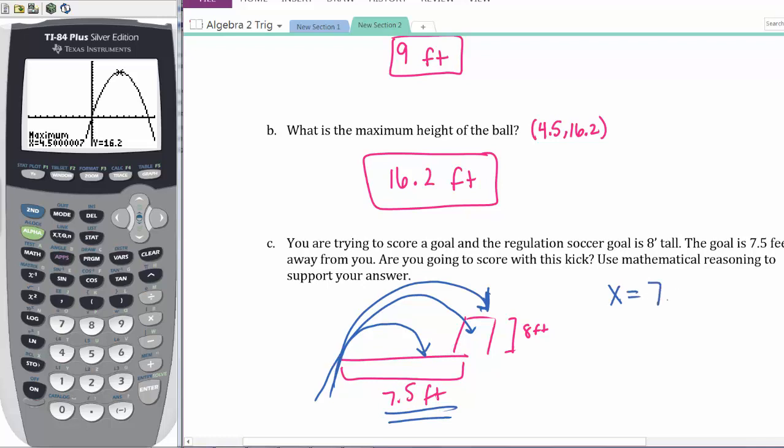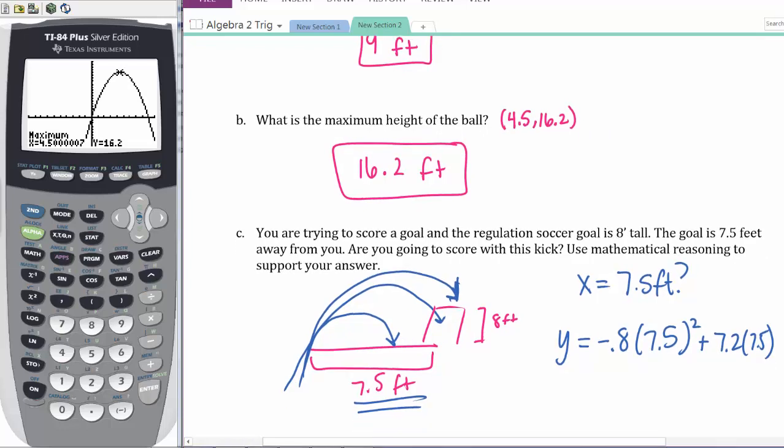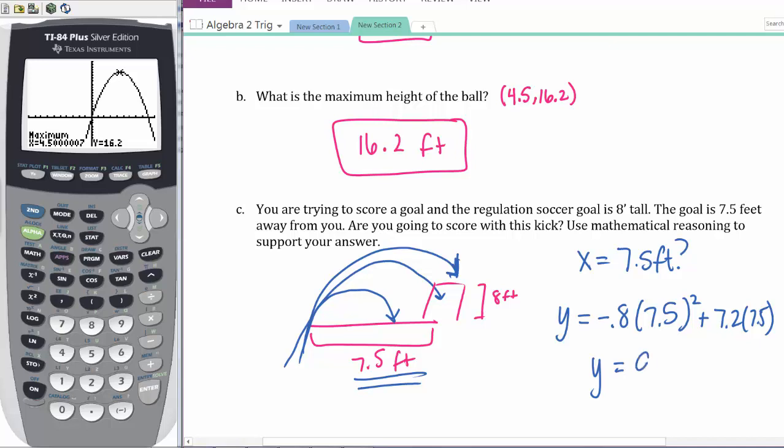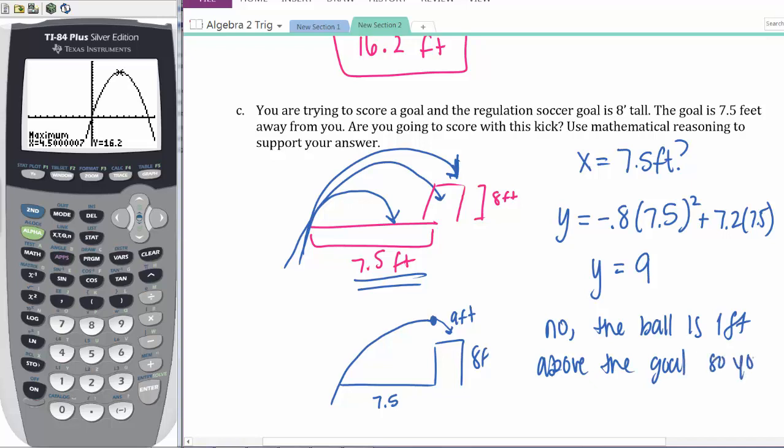Let's figure that out. We have an equation, so let's use it. y = -0.8(7.5)² + 7.2(7.5). That means y equals 9. So at 7.5 feet, my ball is at 9 feet. What happens? Well, that is above the goal. So if it keeps going, it's going to hit right over. So no, the ball is 1 foot above the goal. You would be kicking it over the top.